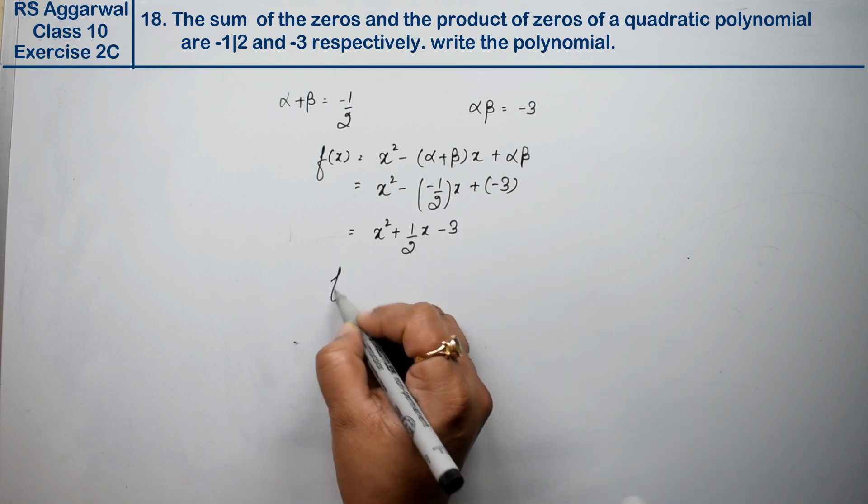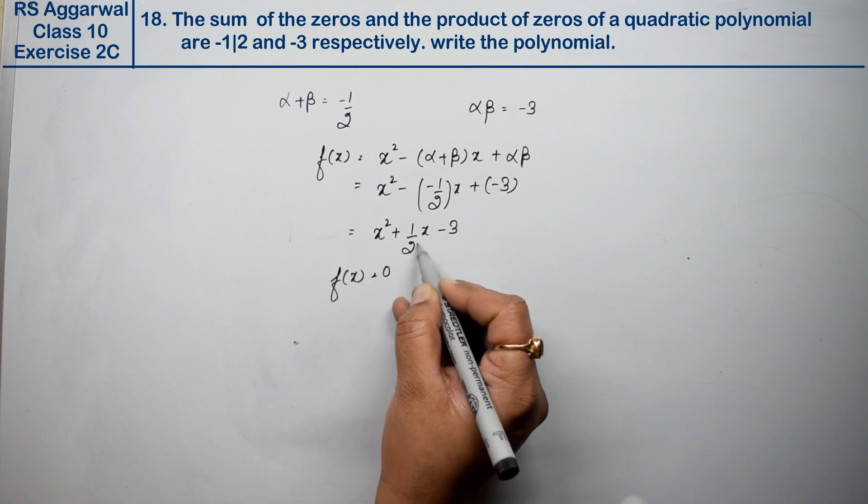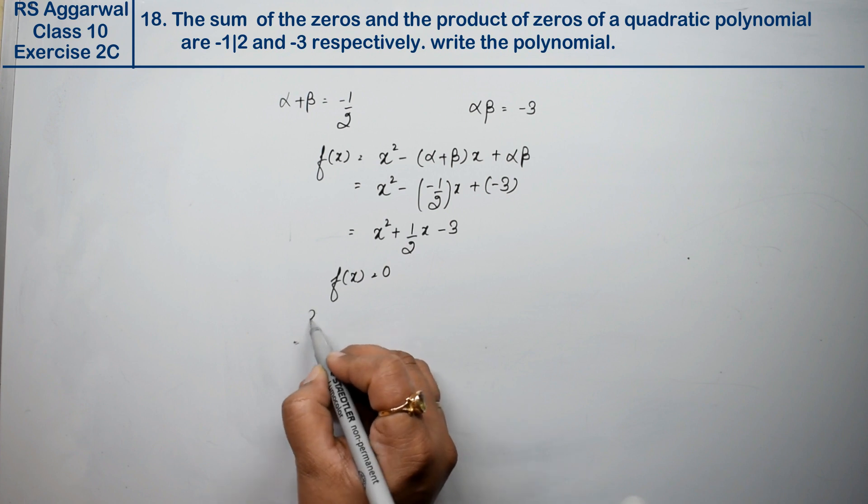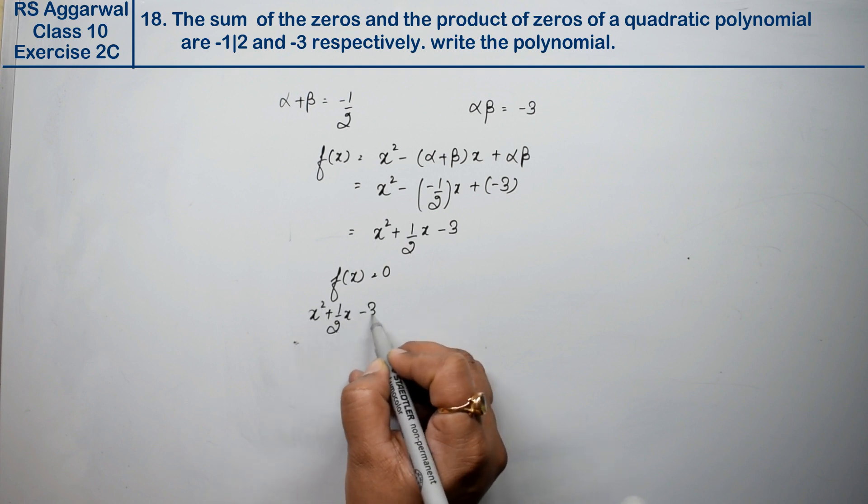Now we know that f(x) is equal to 0, so we will remove this 2 to the left. This is the expression without denominator.